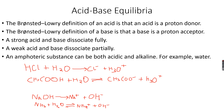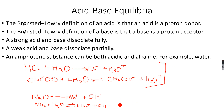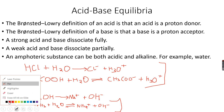Water has donated a proton and formed an OH- ion. The NaOH reaction goes to completion, so NaOH is a strong base. The ammonia reaction is reversible — it reaches equilibrium but does not go to completion, which means ammonia is a weak base. Weak bases dissociate partially and strong bases dissociate fully, just like strong acids. An amphoteric substance can be both acidic and alkaline — for example, water. Water has acted as a base in some cases and as an acid in others, so water is an amphoteric substance.